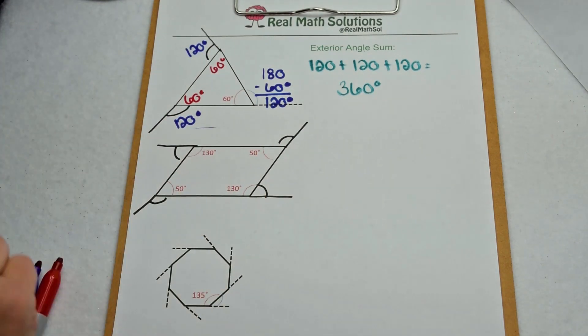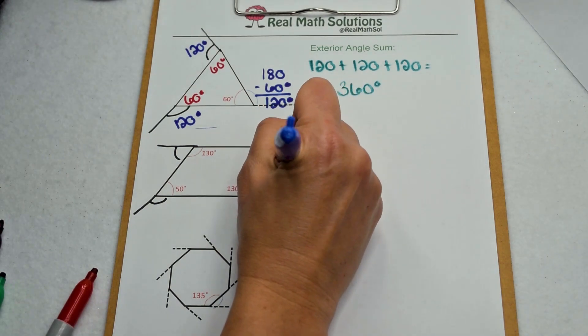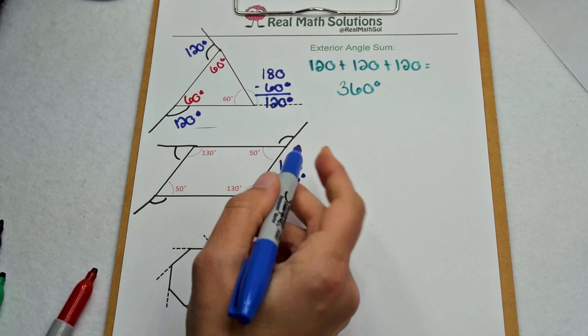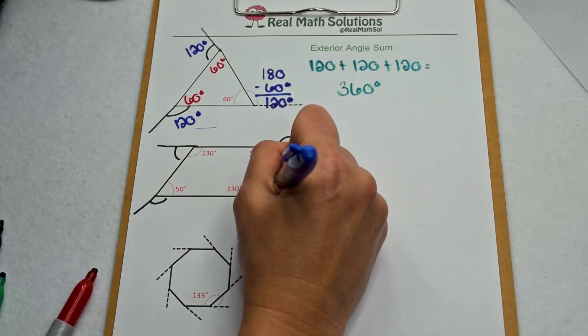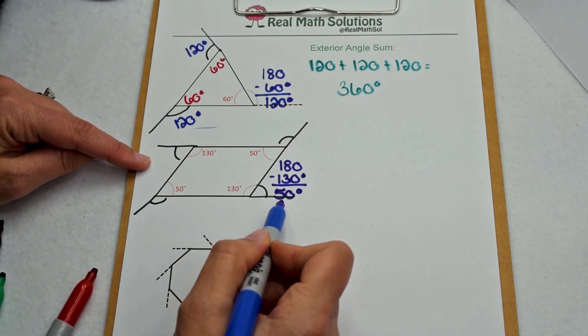When we do, our exterior angles are going to be supplementary to our interior angles. So to find the exterior angles, we can do 180 minus the interior angle. So here, I would have 180 minus 130 telling me this exterior angle is 50 degrees. If this exterior angle is 50 degrees, I know this one is as well.